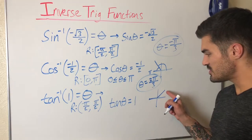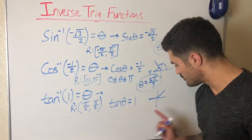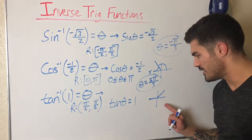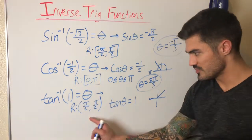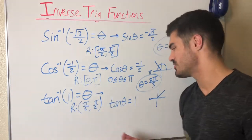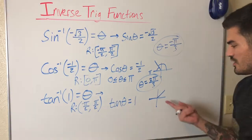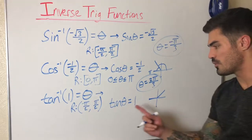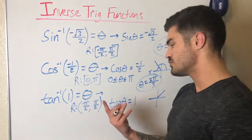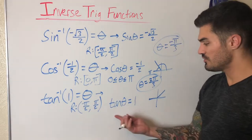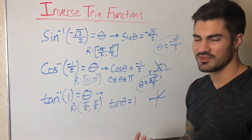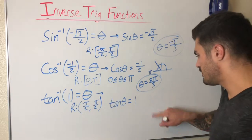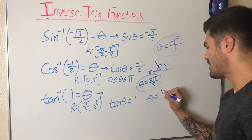Where does sine equal cosine? Well, in quadrant four tangent is negative, so it's definitely not quadrant four. We are in quadrant one. Where is tangent theta equal to one? At theta equals pi over four, because sine is root two over two and cosine is root two over two, so tangent is one — sine over cosine. So our theta equals pi over four.